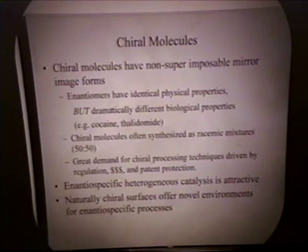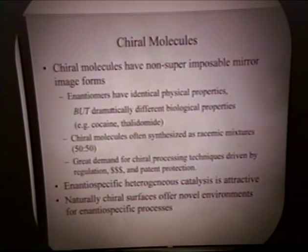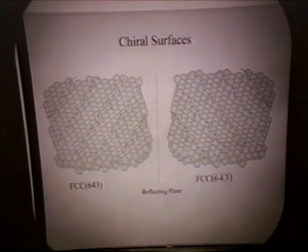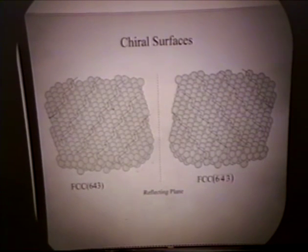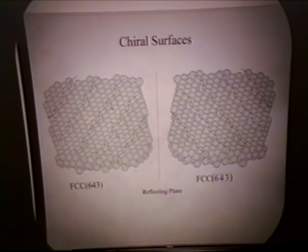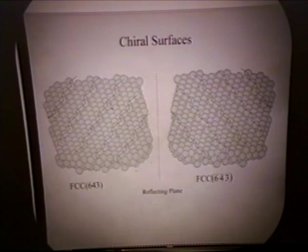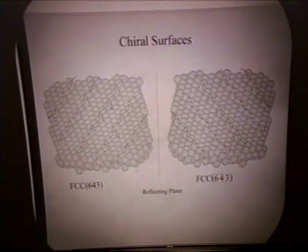Our group looks at a much more easily characterizable system, and we study chiral molecules adsorbing on naturally chiral surfaces. What I'm showing you here is an example of a chiral surface. The figure on the left is obtained by cutting an FCC crystal along the 643 Miller index plane. This creates steps and kink structures in a periodic lattice structure. You can get the mirror image on the other side by cutting along the negative 6, negative 4, negative 3 Miller index plane.